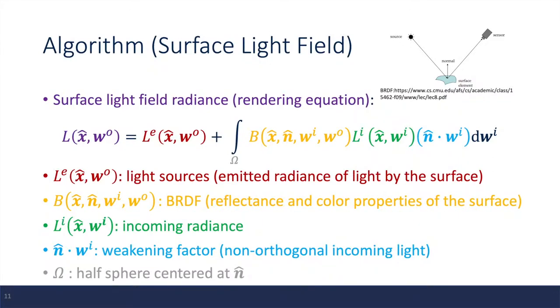So next, I'm going to talk about how we're going to calculate the surface light field. This can be calculated with the rendering equation, and it has the following terms. The first term represents light sources. In other words, if the surface is the light source, this term would have a non-zero value. And next, we have an integral that's taken over the half sphere centered at the surface normal, and it has three terms.